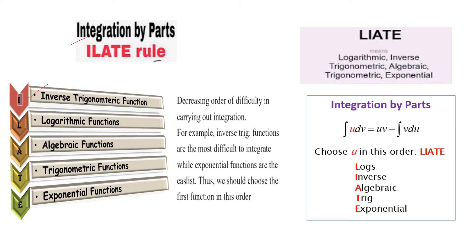I stands for Inverse trigonometric function, L for Logarithmic function, A for Algebraic function, T for Trigonometric function, and E for Exponential function. A decreasing order of difficulty in carrying out the integration is kept in mind. Inverse trigonometric functions are most difficult to integrate, whereas exponential functions are the easiest. We choose the first function in this order to make integration by parts easier.